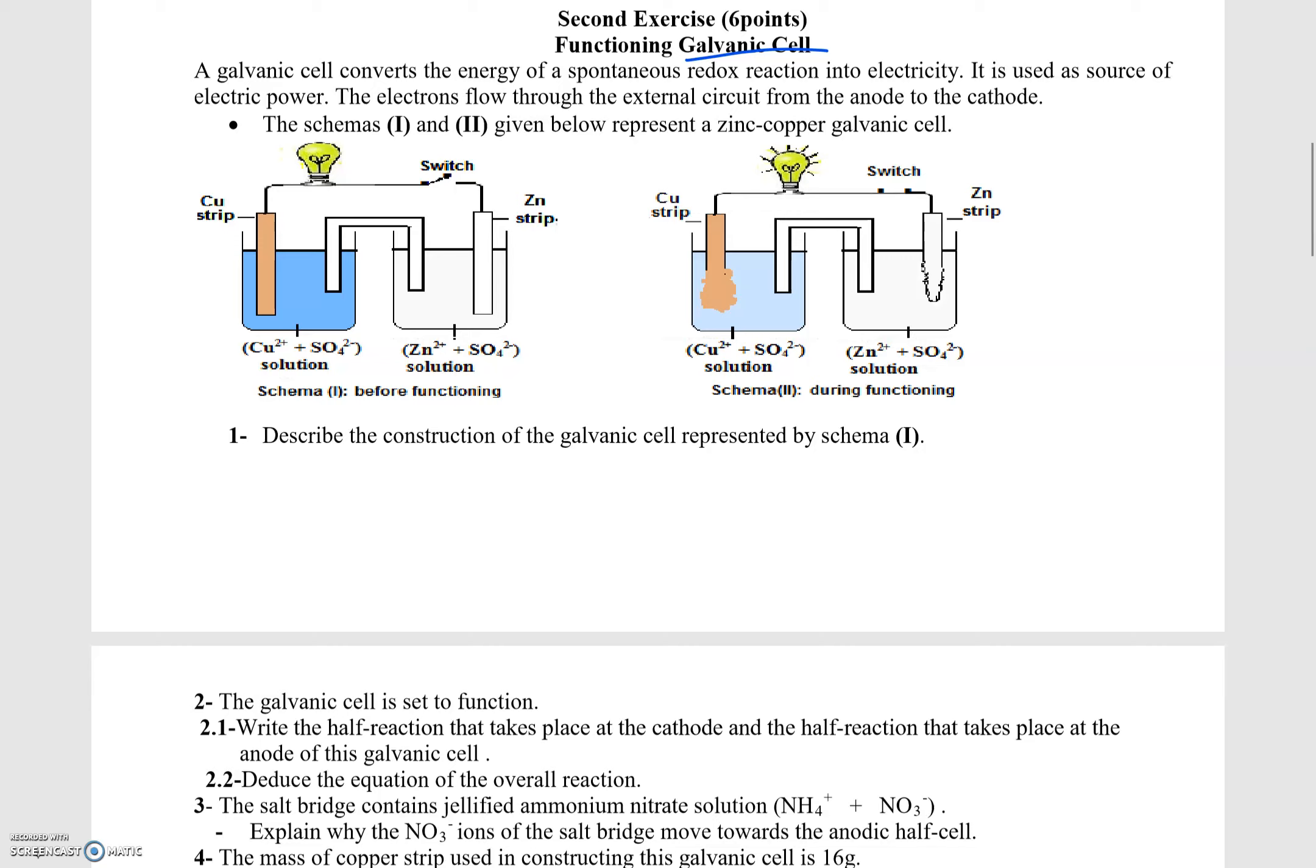The galvanic cell converts the energy of spontaneous redox reaction into electricity. It is used as a source of electric power. The electrons flow through the external circuit from the anode to the cathode. The schemas 1 and 2 below represent the zinc-copper galvanic cell.